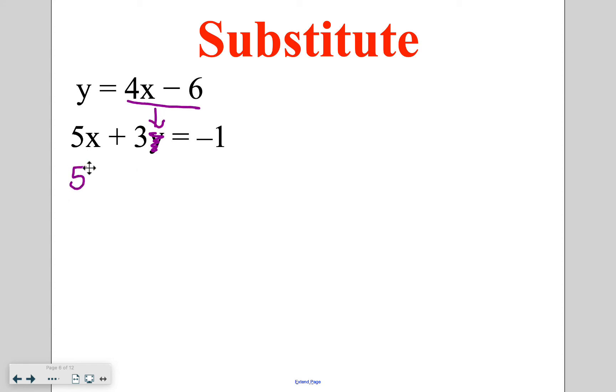So the 5x doesn't change. That's going to stay put. Then we have plus. The 3 stays put. 3 now needs to be multiplied with y. y is going to be replaced with this other expression, 4x minus 6. Close that parenthesis, and then it equals negative 1. So we replaced the letter y so that both variables in our equation now are x. We can now solve for a single variable.